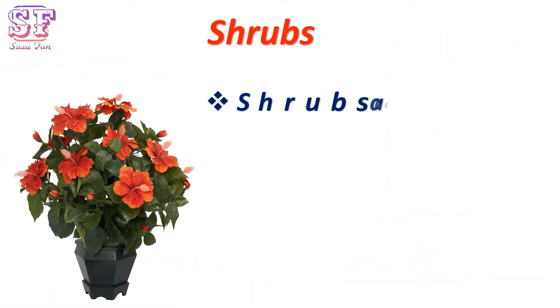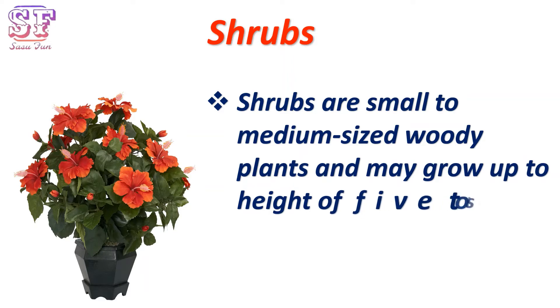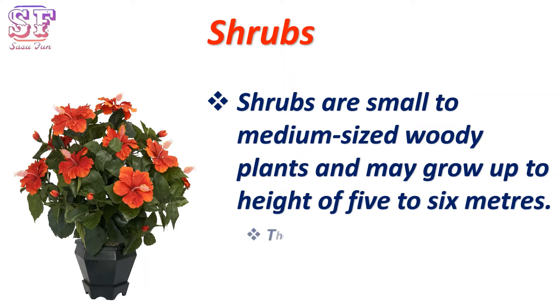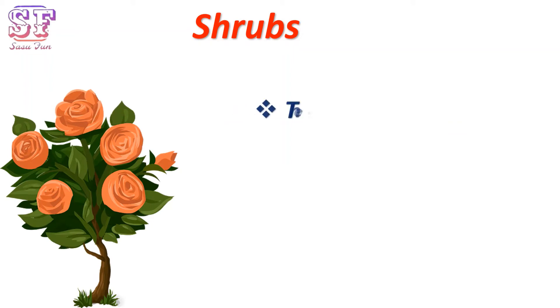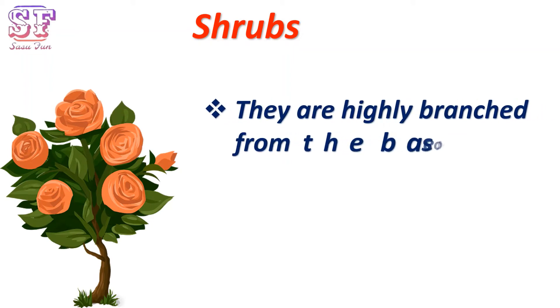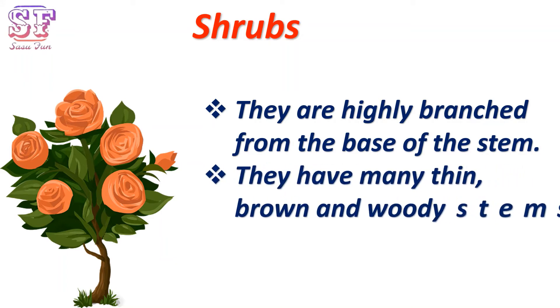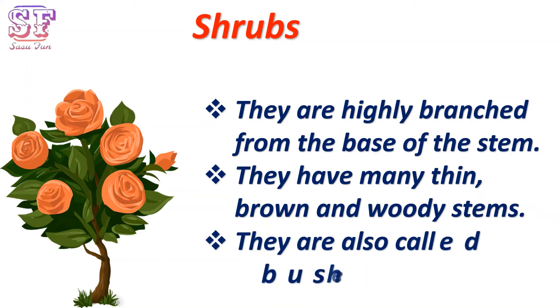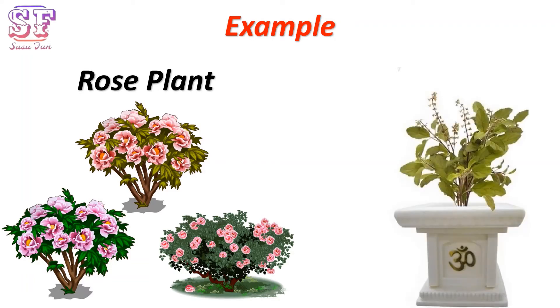Shrubs are small to medium-sized woody plants and may grow up to a height of five to six meters. They are smaller than trees. They are highly branched from the base of the stem and have many thin, brown, and woody stems. They are also called bushes. Examples are rose plant and tulsi plant.